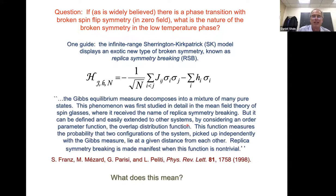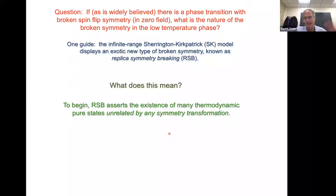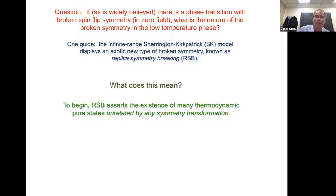The first sentence says the Gibbs equilibrium measure decomposes into a mixture of many pure states. An infinite-volume thermodynamic state is an infinite-volume Gibbs state — a probability measure on infinite-volume spin configurations, with probabilities given by the usual Boltzmann distribution. A pure state is an extremal Gibbs state: it cannot be written as a linear combination of any other Gibbs states. It's similar to pure and mixed states in quantum mechanics. A pure state cannot be written as any combination of other Gibbs states; if you do have a Gibbs state that is a linear combination of pure states, that is called a mixed state.